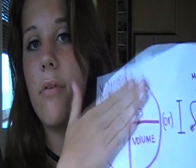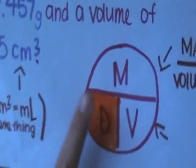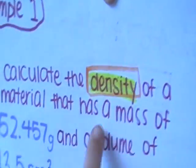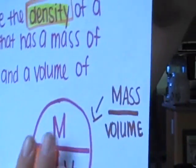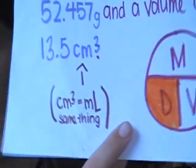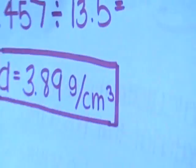Either one works, but that mnemonic only works for that one equation. Anyway, just cover up the variable you're looking for and that's how you find your answer, until you memorize it. For instance, I covered up density because the problem asks for it — and I got 3.89 grams per centimeters cubed.